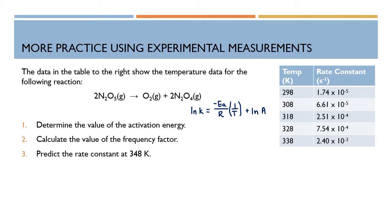I'm going to rewrite my slope equation that I got when I graphed this: y equals negative 1.24 times 10 to the 4th x plus 30.6. Everything is rounded to three significant digits.